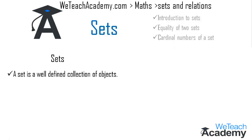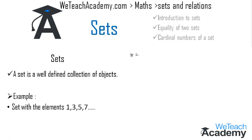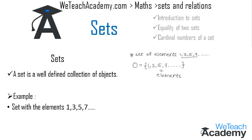The objects are nothing but the elements of a set. For example, consider a set with the elements one, three, five, seven, and so on. We observe that the elements are the odd natural numbers. We denote this set with the letter O and write the elements as one, three, five, seven, and so on. These numbers are called elements of the set, written in a row, separated by commas, and enclosed in braces.